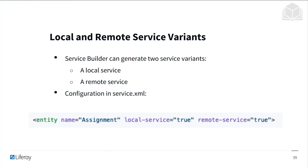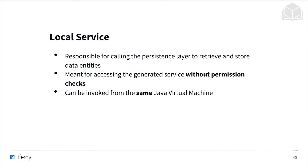How you configure this is within your service XML. You'll add an attribute for local service if you want that to be true, and remote service if you want that to be true. By default, the remote service is false. The local service is responsible for calling the persistence layer to retrieve and store data entities, and is meant for accessing the service without permission checks. It can be invoked from the same Java virtual machine.